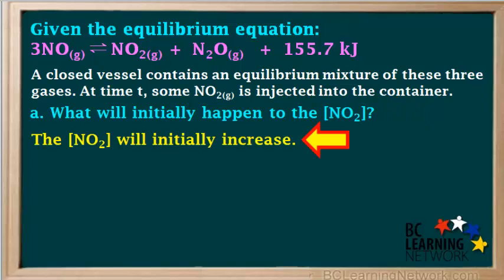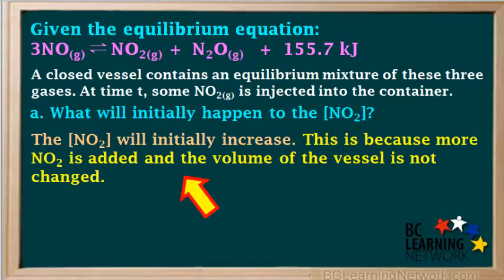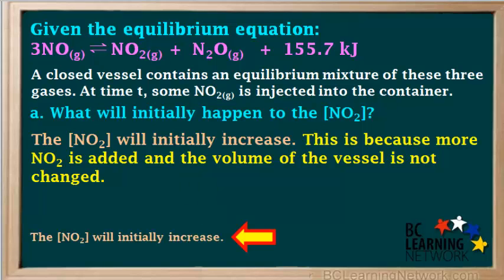The answer is, the concentration of NO₂ will initially increase. This is because we add more NO₂ to the vessel without changing its volume, so we have a greater amount in the same volume, thus a higher concentration. We'll make a note that the concentration of NO₂ initially increases.